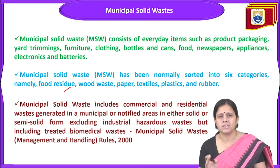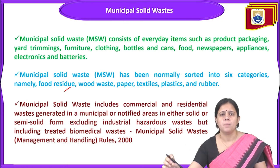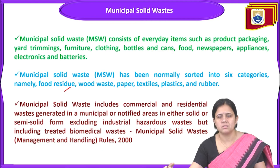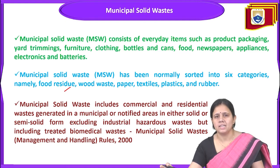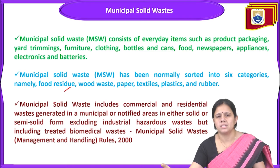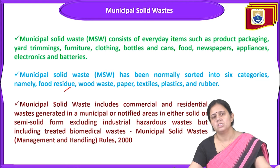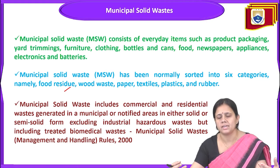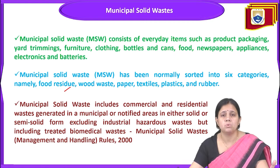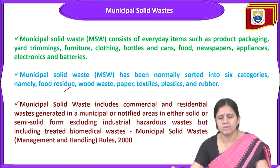The next category is wood waste — any waste that contains wood. Then paper waste — waste from packaging papers, newspapers, or waste paper. Then textile waste — discarded cloths and materials. And then plastic waste and rubber waste. So municipal solid waste is divided into six categories: food waste, wood waste, paper waste, textile waste, plastic waste and rubber waste.